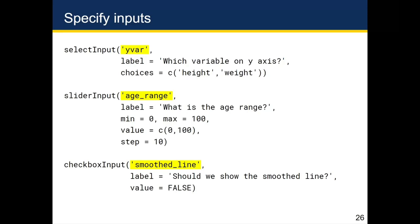One thing to notice is that when I named the variables yvar, age_range, and smooth_line, I put those variable names in quotes. This is pretty much the only time in R that you'll put a variable name in quotes — in the selectInput, sliderInput, or any of the input functions in Shiny. The reason it's an exception is because this line of code gets converted into HTML directly, and in HTML and JavaScript, variable names have to be in quotes when assigned. So remember: if you're dealing with inputs, put the variable names in quotes.